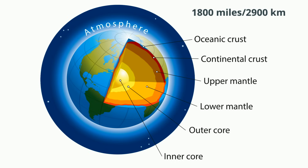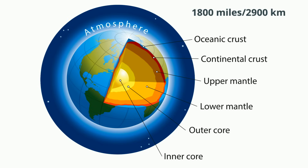The core extends from below the mantle to the center of the Earth. Scientists believe the core is made mostly of iron and nickel. The core is the densest layer and makes up about one-third of the Earth's mass.